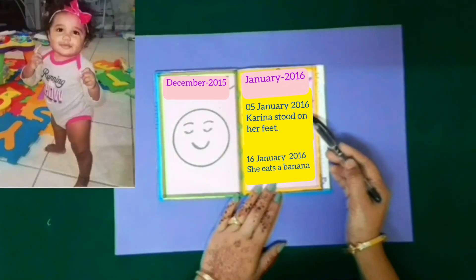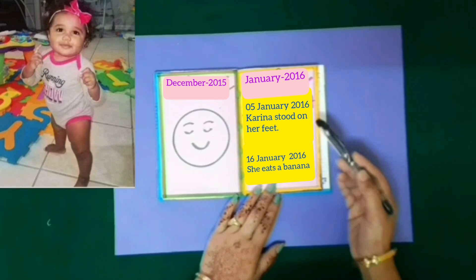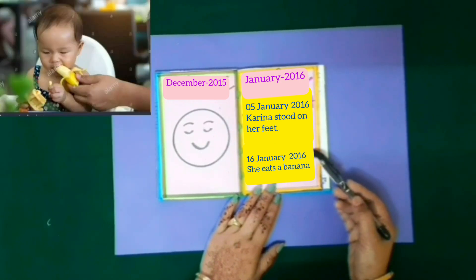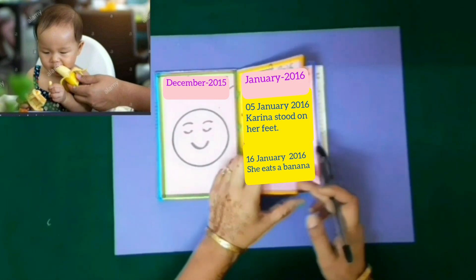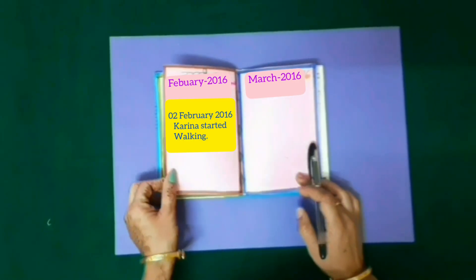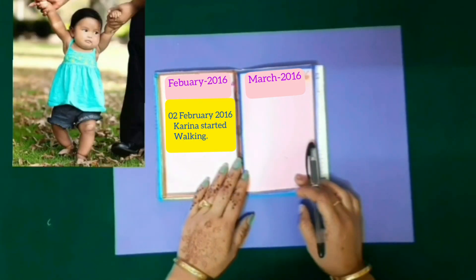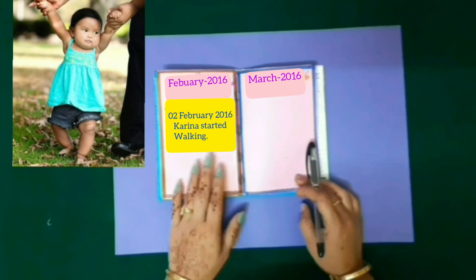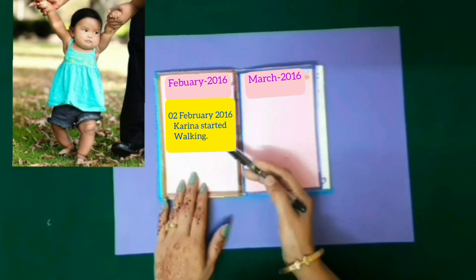On 5th January 2016, Kareena stood on her feet. On 16th January 2016, she ate a banana. And in the month of February, on 2nd February 2016, Rani wrote that Kareena started walking.